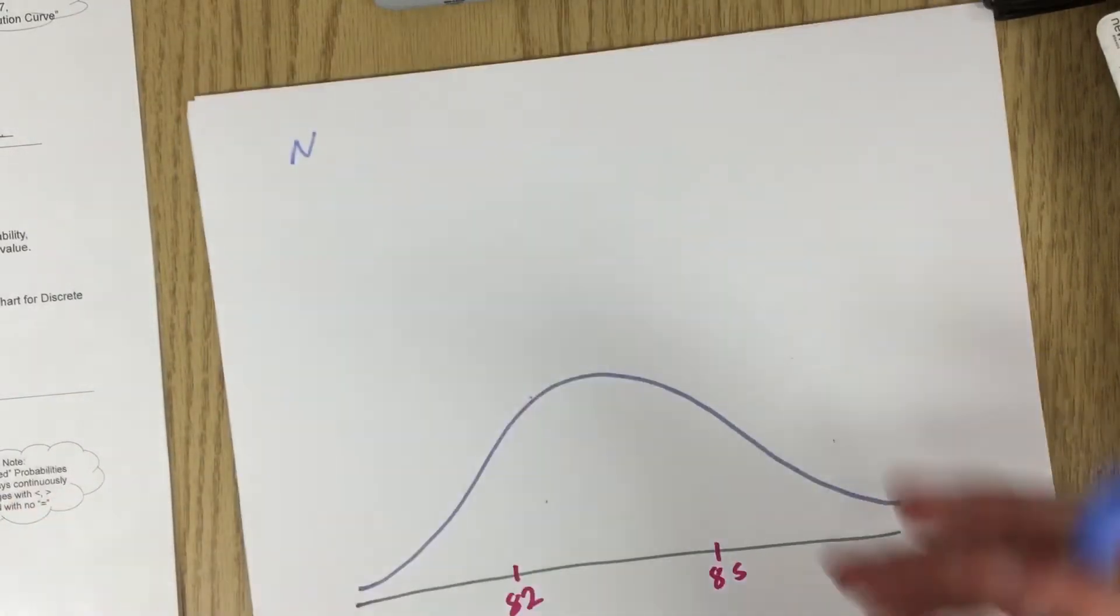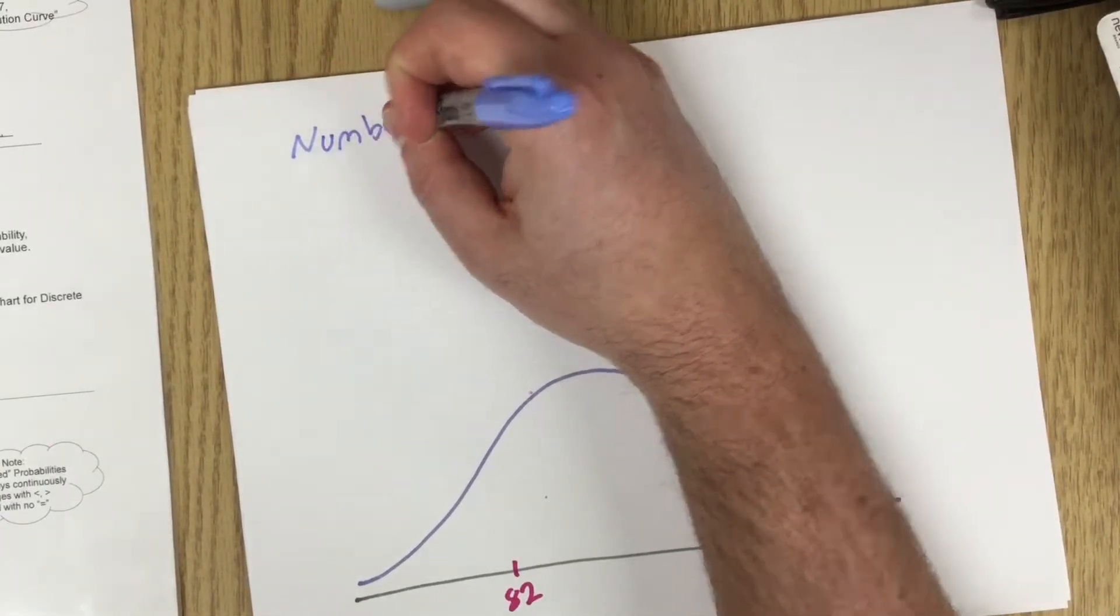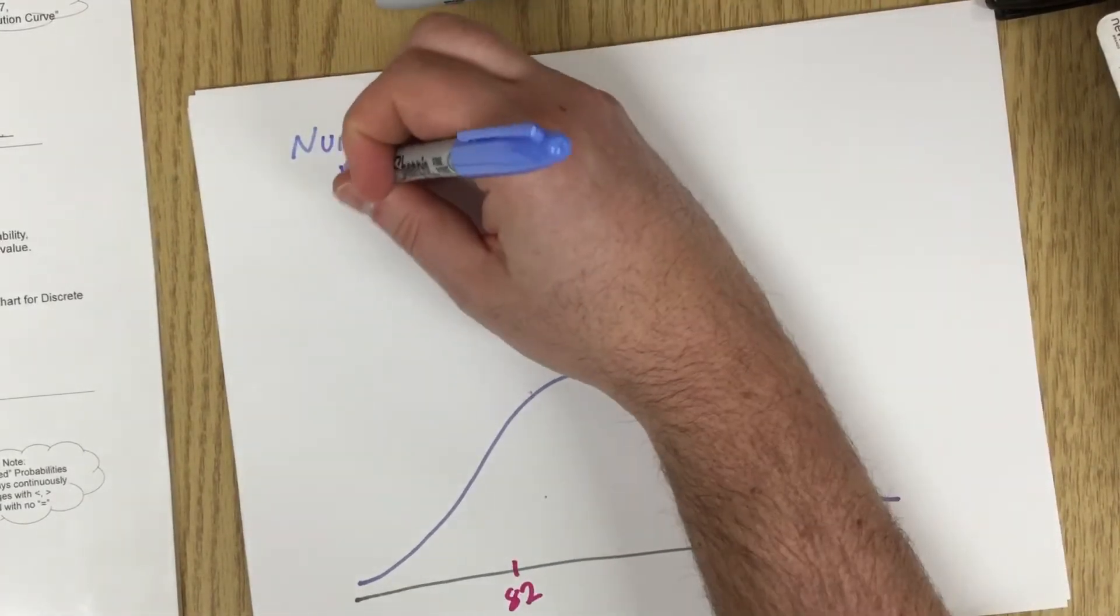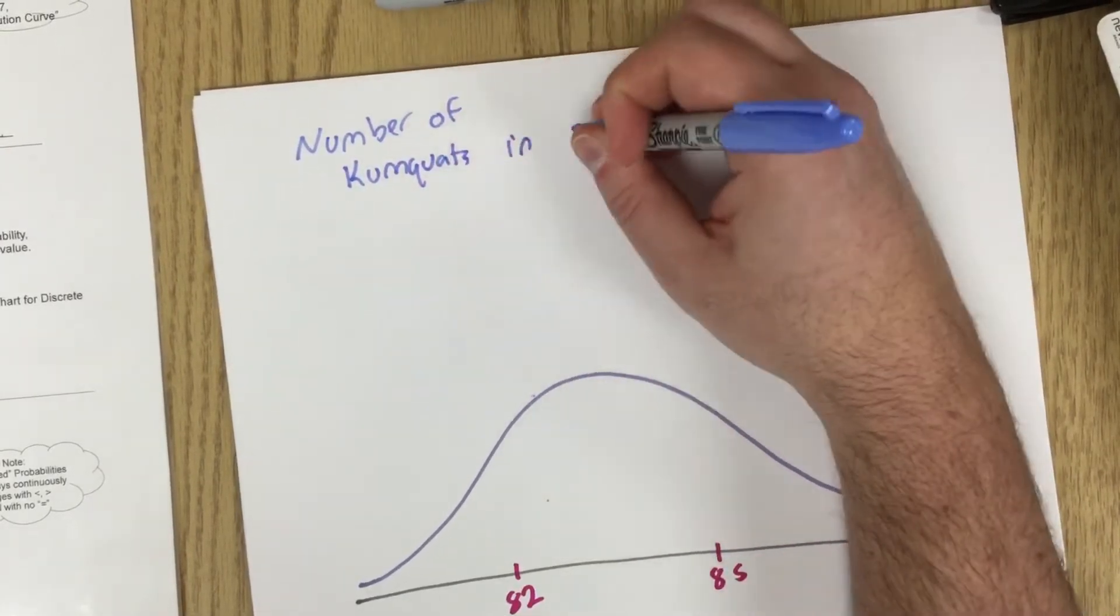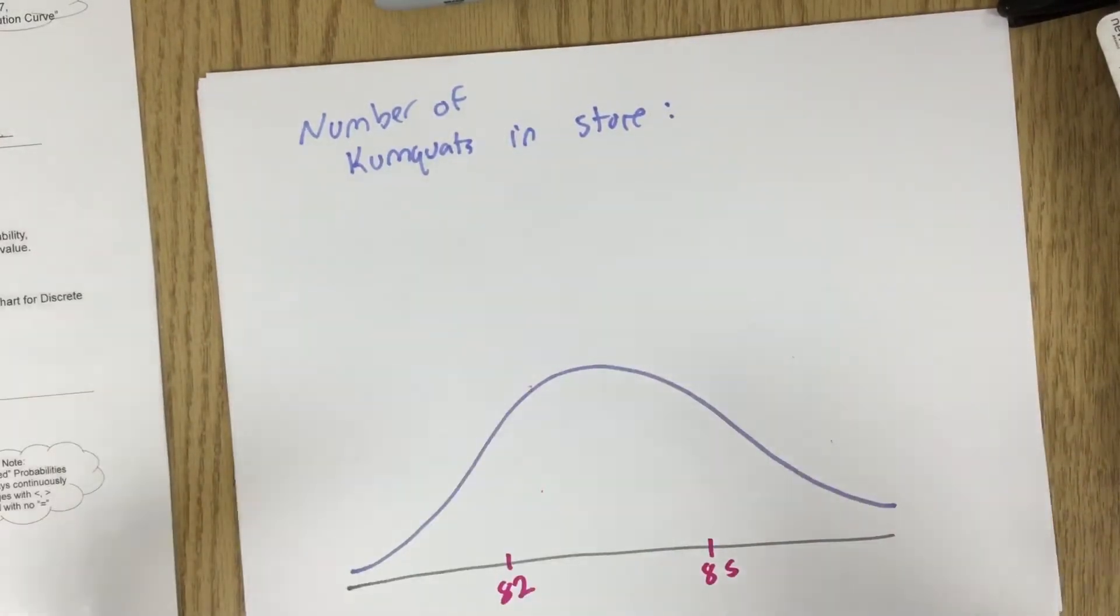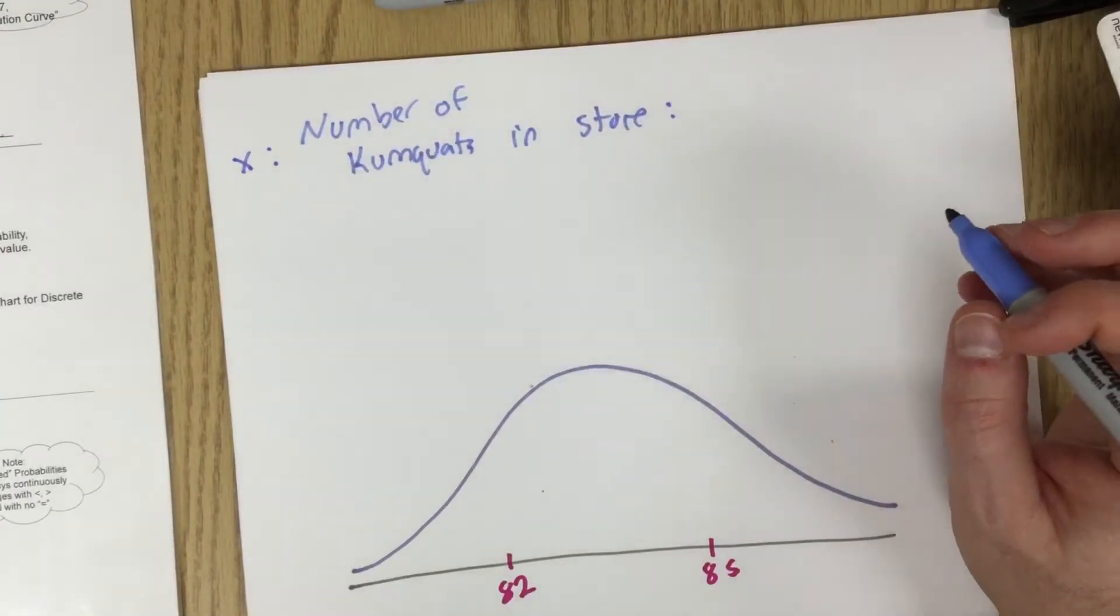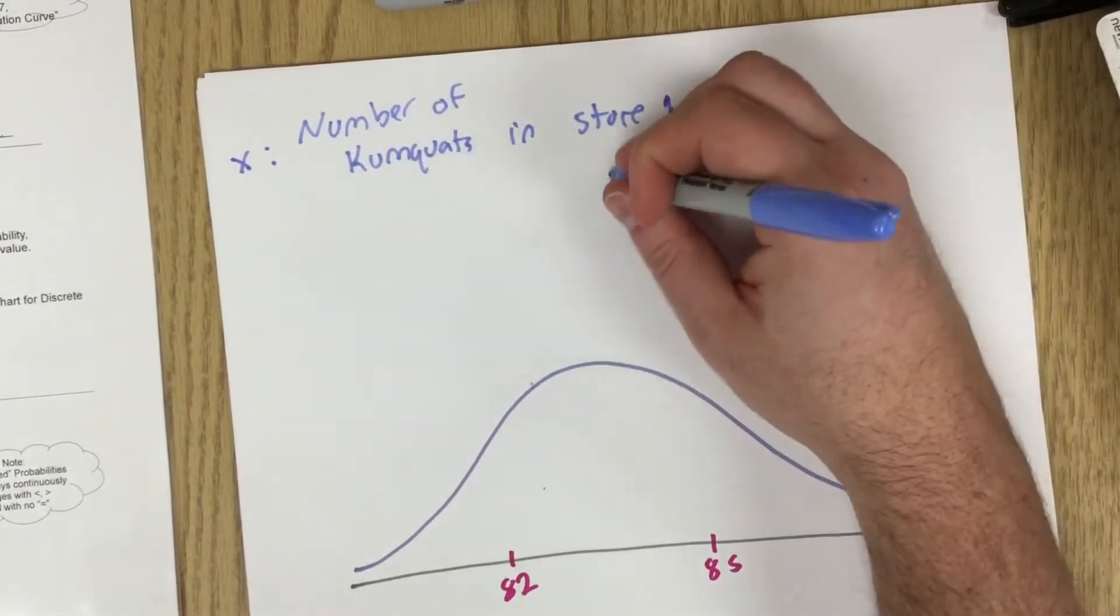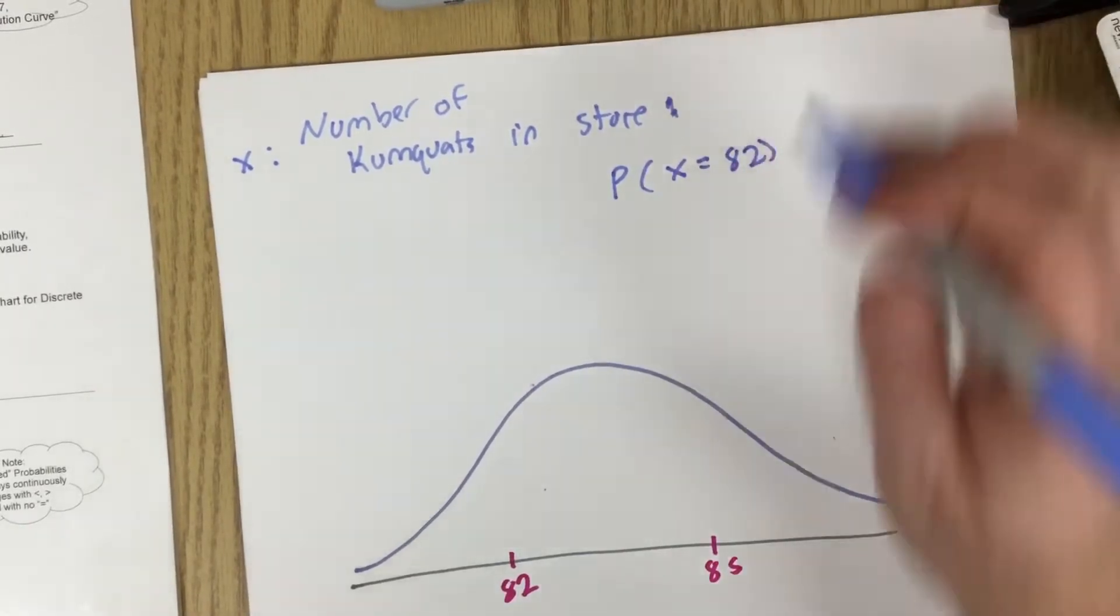So let's say for example I had a variable of number of kumquats in the store. So X is going to be the number of kumquats in the store. And I want to note what's the probability of having exactly 82 kumquats.